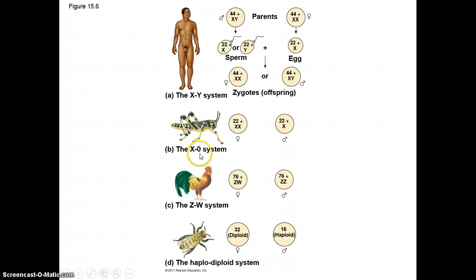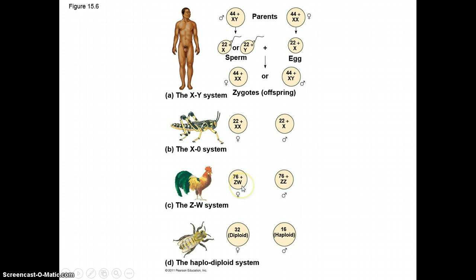Grasshoppers have an X0 system — if they inherit two X's, they're male, and if they inherit one X, they're female. Chickens have a ZW system: ZW gives you a male and two Z's gives you a female. And then there's a haplodiploid system — a diploid bee, for example, will be male, and a haploid bee will be female.